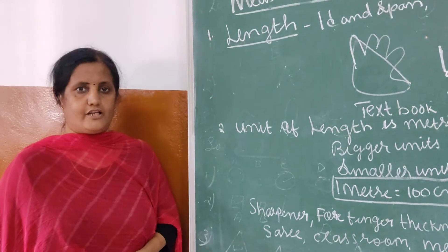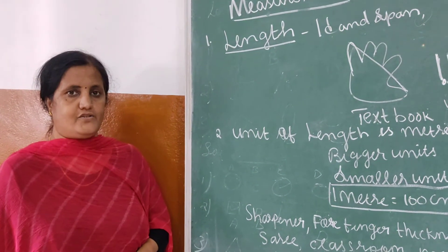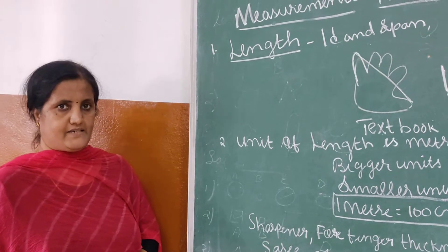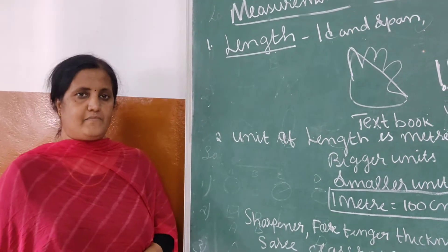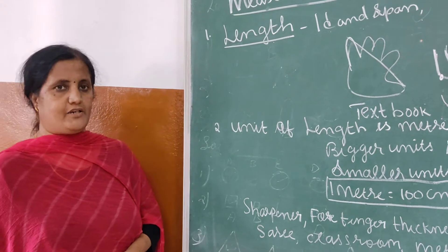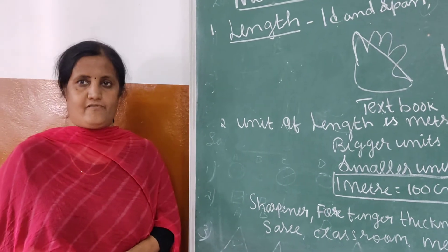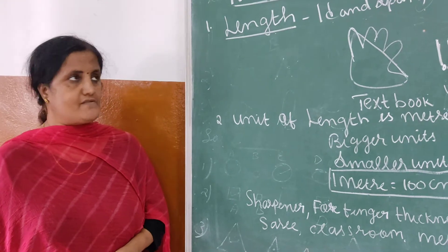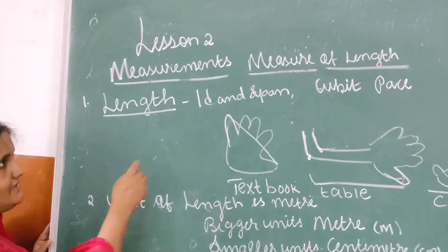Good morning children, welcome to new morning. Today we are going to start a new lesson — that is measurement. Children, generally measurements are of three types: measurement of length, measurement of weight, and measurement of capacity. So first we are going to look at the measurement of length.